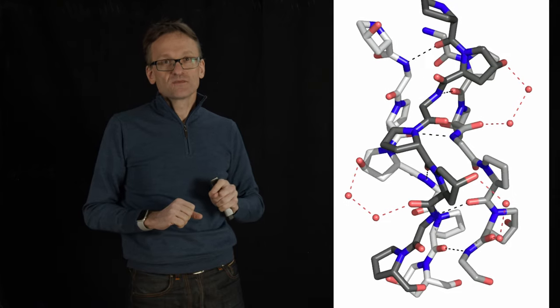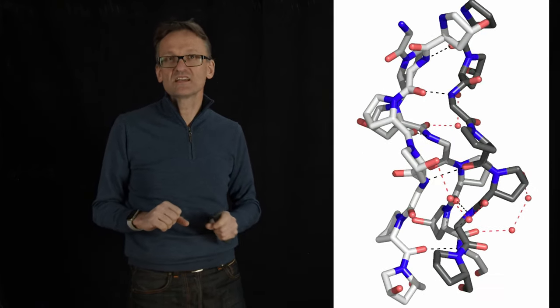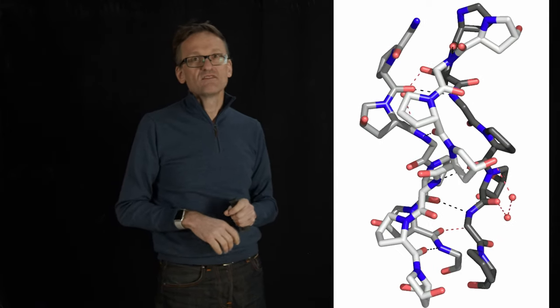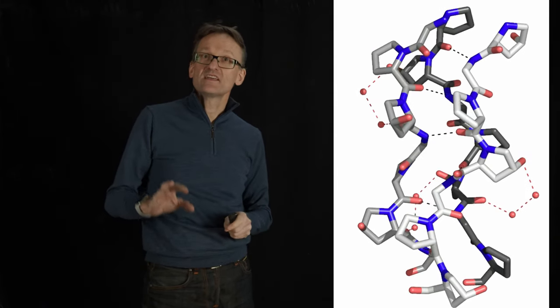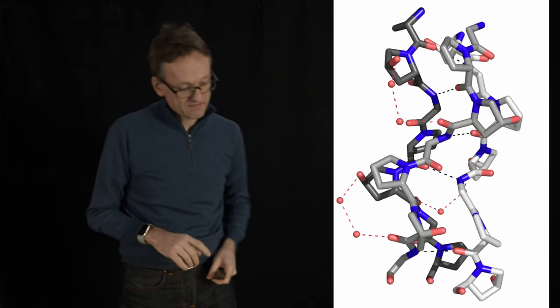Do you see all those rings? Those rings are proline residues but I said that proline was a helix breaker before. Proline definitely is a helix breaker but proline is an alpha helix breaker. This is completely different. This is not an alpha helix.